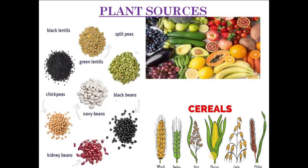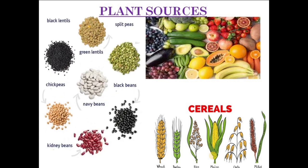Pulses are rich sources of protein. Some examples of pulses are kidney beans, peas, beans, green gram, and urad, etc.